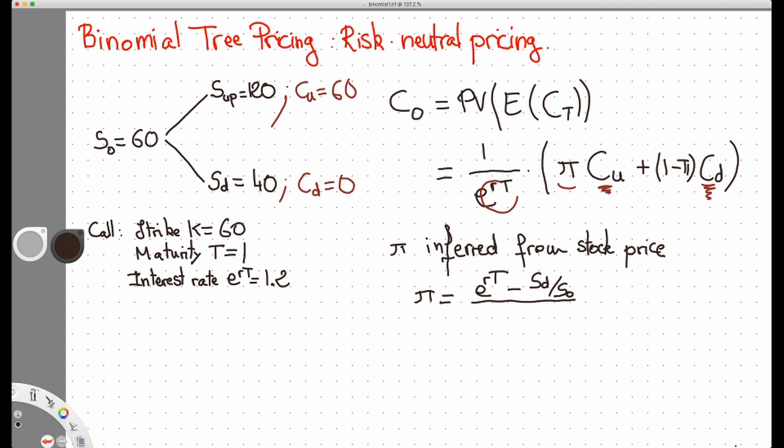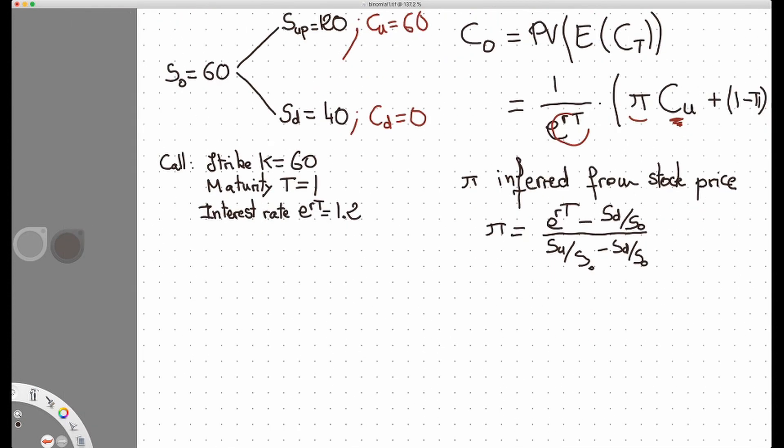Divided by the difference in gross returns, so the price in the upstate minus S0 minus Sd over S0. So now let's go back to our problem and plug those numbers and solve for the price of the call.